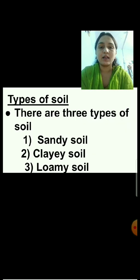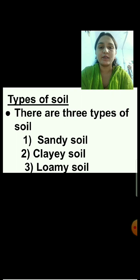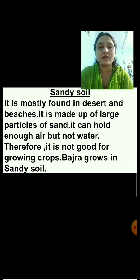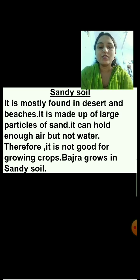There are three types of soil. First one is sandy soil, then clay soil, and then loamy soil. Sandy soil is mostly found in deserts and beaches. It is made up of large particles of sand. It can hold enough air but not water. Therefore, it is not good for growing crops. Bajra grows in sandy soil, but most plants cannot grow in it.